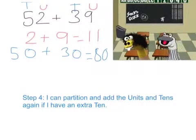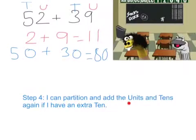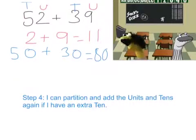Well, do the same again. Look at step four. It says I can partition and add the units and tens again if I end up with an extra ten. Okay, so I have to partition eighty and eleven again.